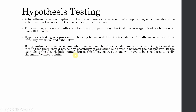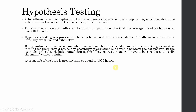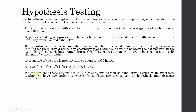In the example of the electric bulb manufacturer, the following two hypotheses have to be considered: the average life of the bulb is greater than or equal to 1000 hours, or the average life of the bulb is less than 1000 hours. These options are mutually exclusive as well as exhaustive — either it is greater than or equal to 1000, or it is less than 1000. There is no other option available.